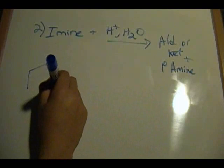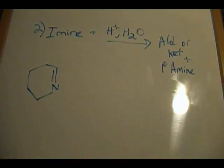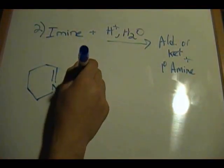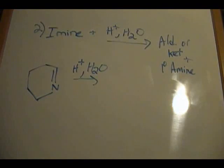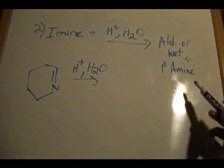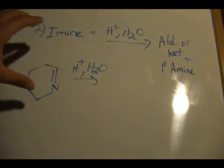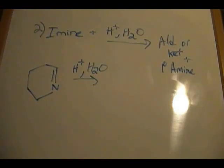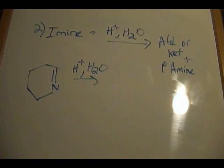Let's say we have this ring with an amine inside of it. There's a carbon-nitrogen double bond and we're going to treat this with H⁺ and water to form our aldehyde or ketone plus our primary amine. This is a unique example — you might expect two separate products, but since you have a ring and the amine is attached within it, you're going to form one product because the primary amine will be hanging off of it.